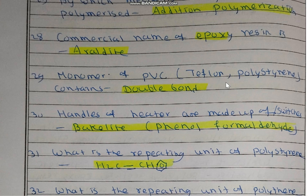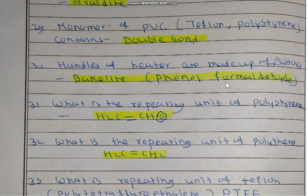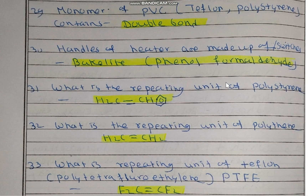This is a most important question. The monomer of PVC (polyvinyl chloride) is vinyl chloride. Teflon or polystyrene contains at least one double bond. Handles of heaters and switches are made up of Bakelite or phenol formaldehyde.